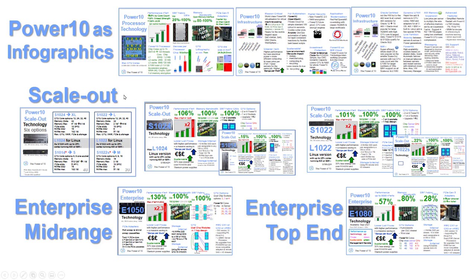Then we look at the scale-out. The scale-out is a little bit more complicated than you might originally think — we actually have six different models. There's one sheet that tells you the differences, then another sheet on the S1024 and S1022, and the matching L models which are much the same. There's also the smaller S1014 and S1022S models. Then we have the big guys: the Enterprise E1050 mid-range and the Enterprise E1080, which was the first model to ship in 2021.